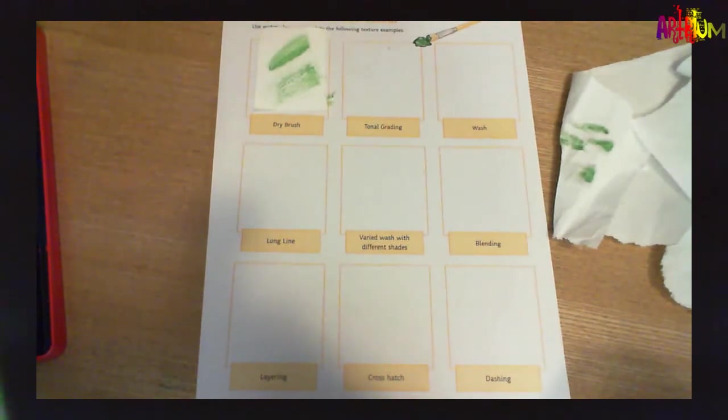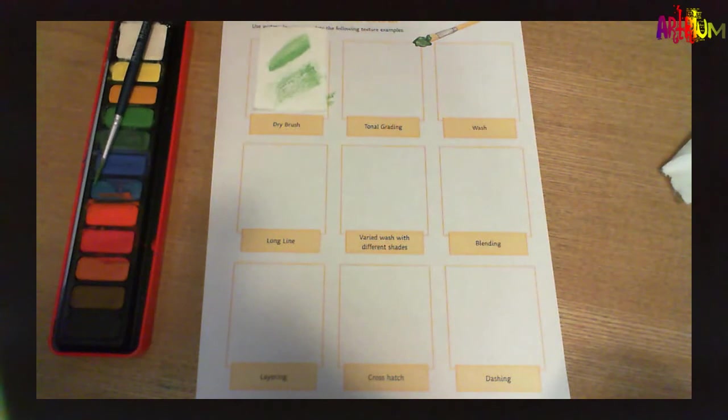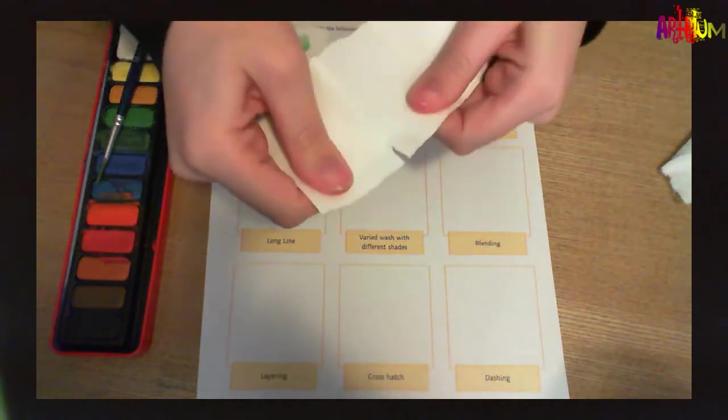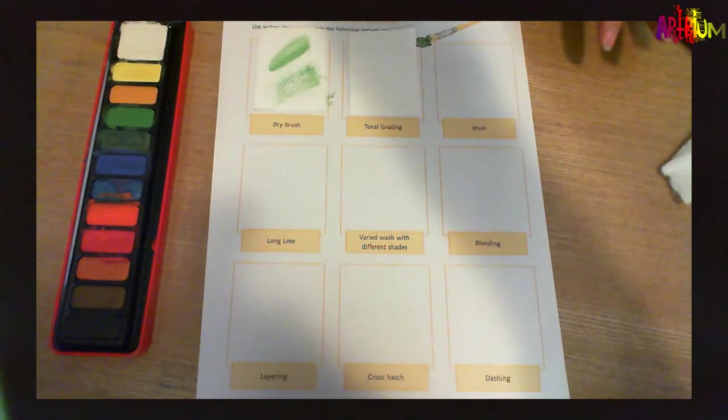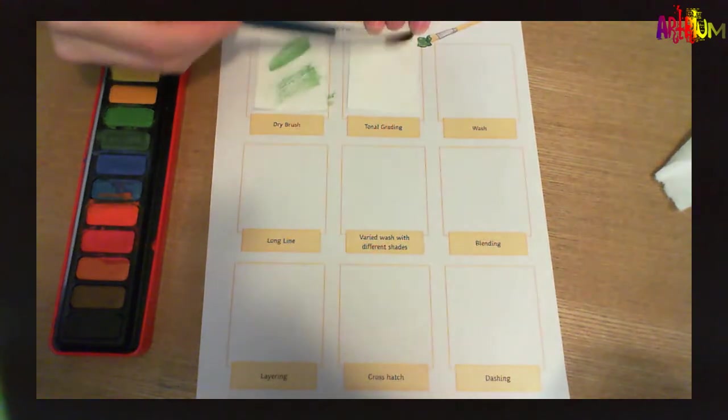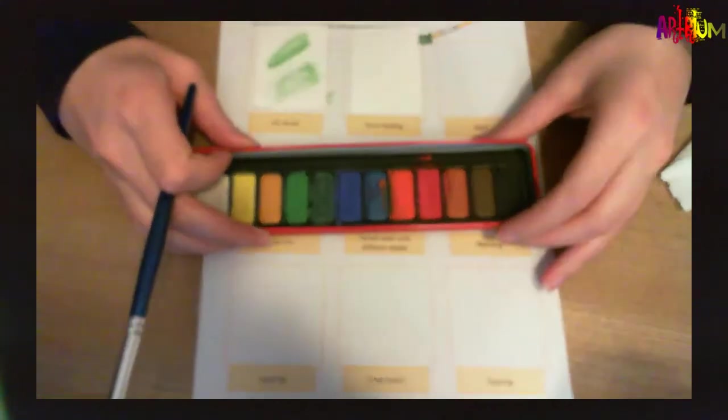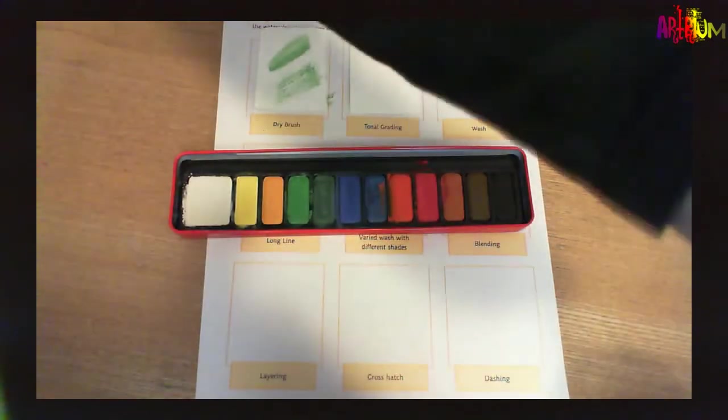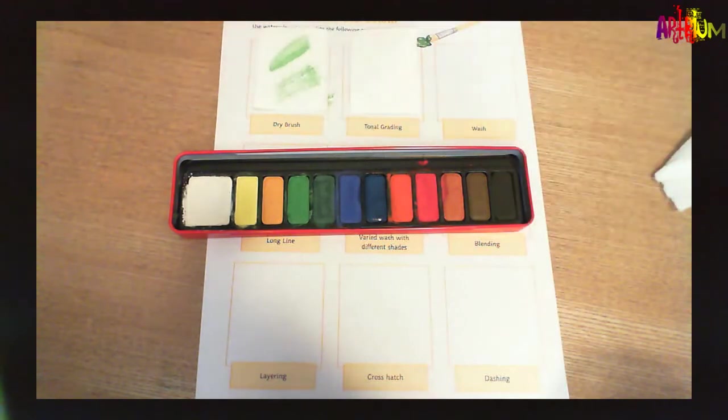The next technique we are going to look at is tonal grading. So we did cover this in the previous video when we were talking about the different tones, tints and shades. I'm just ripping off another little sample piece there. But just as a reminder. I'm going to go with a new paint brush. I've got quite a big brush. A little bit of water on there. And I'm just going to prep that piece of watercolour paper. I think I'm going to go in with a nice light blue. I'm going to build up quite a pigment on there.